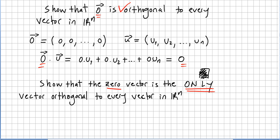We already showed that zero is orthogonal to every vector in R^n. Now for our proof, we have to prove that zero is the only one that is orthogonal to every vector. Let us say there is another vector — let's call it u — a particular vector in the vector space R^n, and that it is orthogonal to all vectors in the vector space. So if u is orthogonal to all vectors, then u is orthogonal to itself.